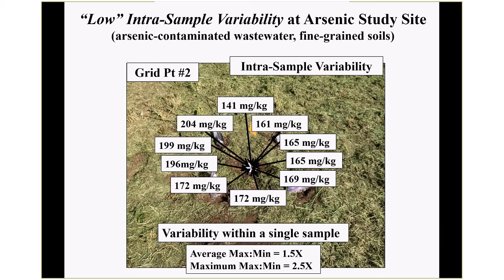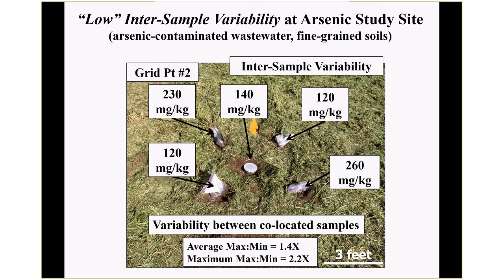Here's what we found. For the low intra-sample variability arsenic site, when a laboratory gets a sample and tests it multiple times, concentration ranged between 141 ppm and 204 ppm — average variability about 1.5 times between the maximum and minimum concentration reported. For inter-sample variability between co-located samples: the lowest concentration was 120 ppm arsenic and just a foot away, 260 ppm. Average variability very similar to what we saw within the samples — and this is completely random. It doesn't mean arsenic concentrations are increasing in any direction.